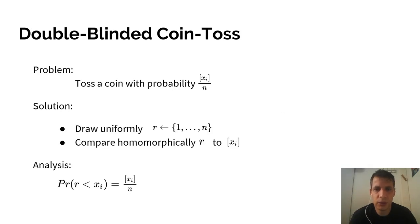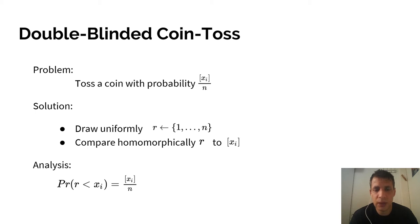Let's see how double-blinded coin tosses can be implemented. We have a ciphertext Xi and a plaintext constant n, and we want to toss a coin with bias Xi over n. Whatever our implementation is, we cannot expect to know the output of the coin tosses, because if we could, we could repeatedly toss coins and figure out what Xi is. Our solution is to draw a plaintext number r between 1 and n and compare it homomorphically to Xi — applying a polynomial whose value is 1 if r is smaller than Xi and 0 otherwise. The probability that r is smaller than Xi is exactly as wanted. In our paper, we show it can be extended and is much more powerful.